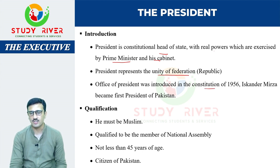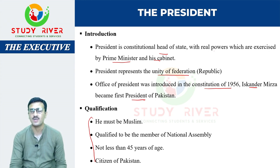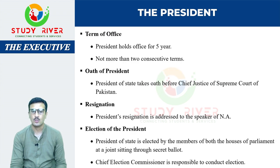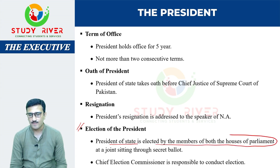Office of president — yeh constitution of 1956 mein, usme Sikandar Mirza first president bane. Qualifications di hui hain. Mera concern hai just president ka jo election hota hai. Election of president — president of state is elected by members of both the houses of parliament at a joint sitting through secret ballot. Chief Election Commissioner is responsible to conduct the election.